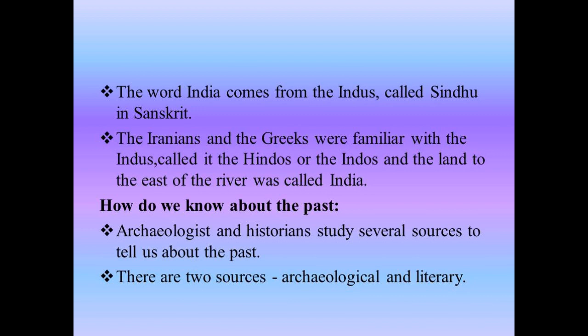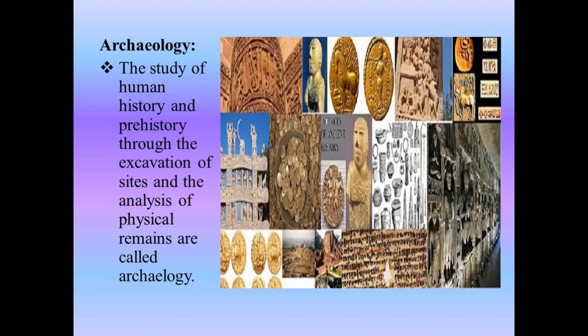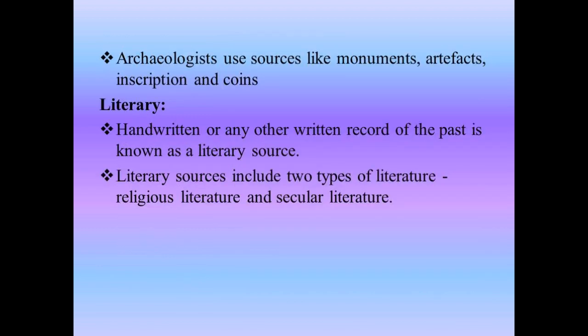How do we know about the past? Archaeologists and historians study several sources to tell us about the past. There are two sources: archaeological and literary. Archaeology is the study of human history and prehistory through the excavation of sites and the analysis of physical remains. Archaeologists use sources like monuments, artifacts, inscriptions and coins.